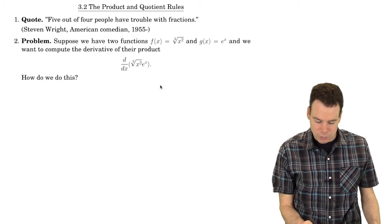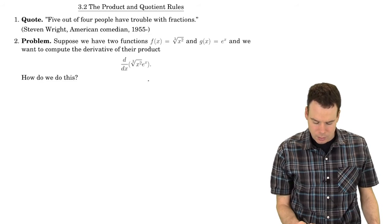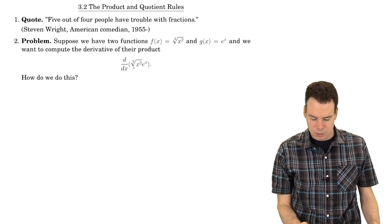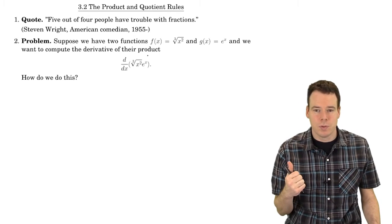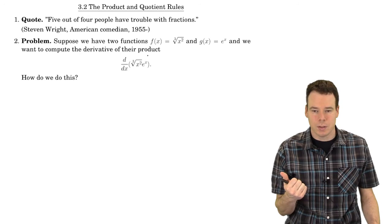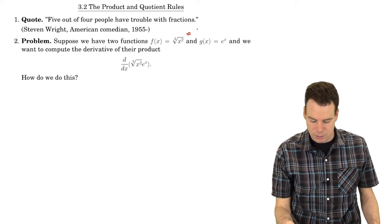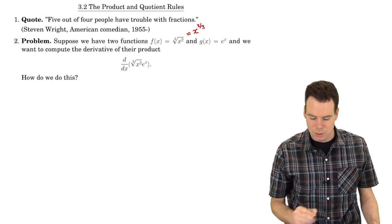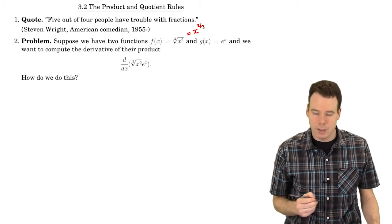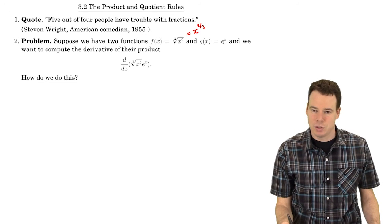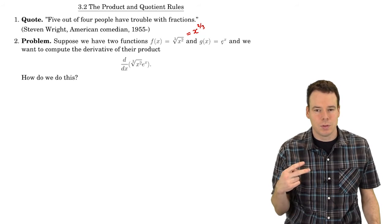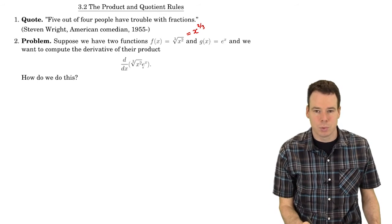If we look at this first problem, it's asking: can we find the derivative of the product of these two functions — the cube root of x squared and e to the x? We know how to find the derivative of the cube root of x squared. If we write it as x to the two-thirds, it's a power of x and we can use the power rule. We also know the derivative of e to the x is just e to the x. So we know how to find the derivatives of the individual factors in this product.